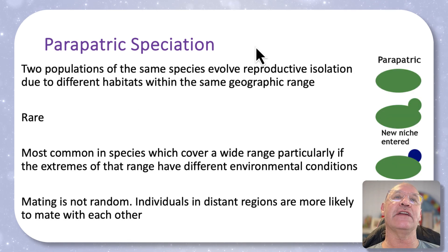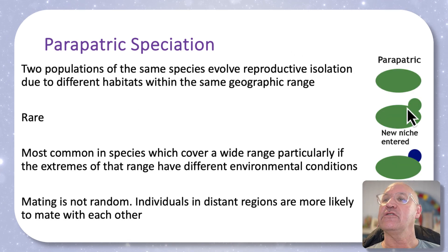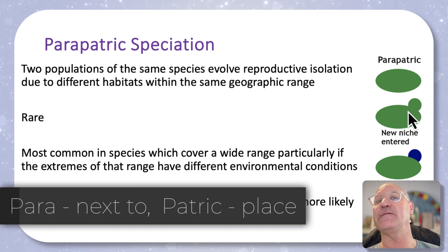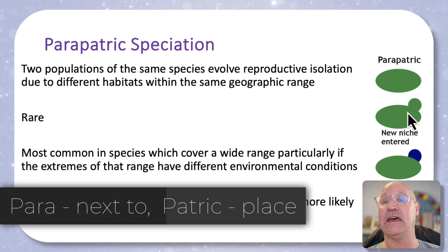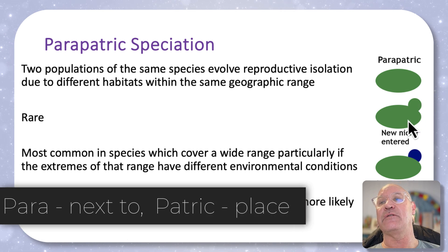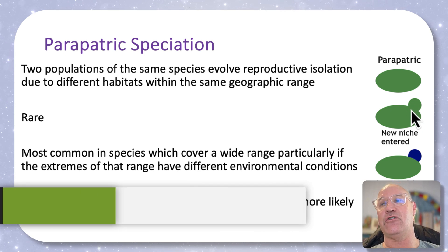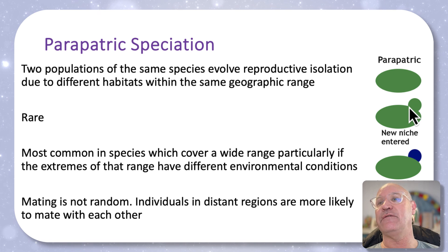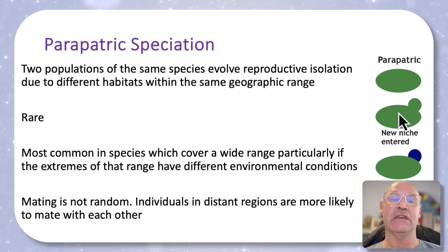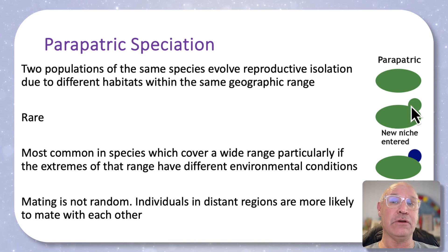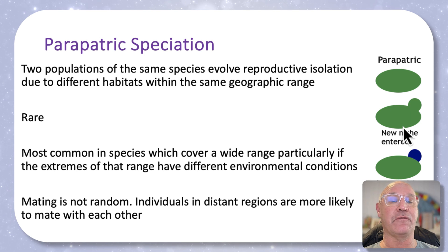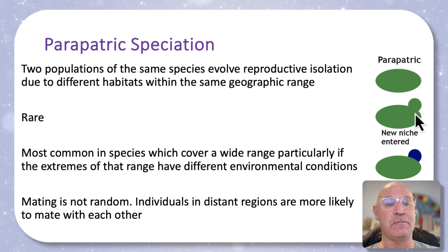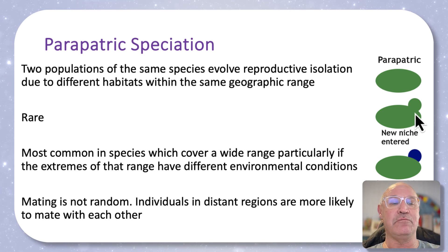Parapatric speciation is when you have two populations that are next to each other but they've got different environmental conditions. There is gene flow between them, but there's non-random mating in that individuals tend to mate with those closest to them. Because they've got different environmental factors, we're going to see different adaptations develop and different gene pools.